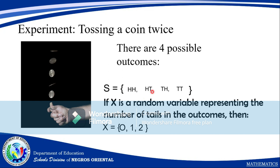For the second and third outcomes — head-tail and tail-head — you got 1 tail each. Since it's the same number, you write it once. For two tails (T, T), you have 2. Therefore, the random variable X for the number of tails in the outcomes is the set {0, 1, 2}.